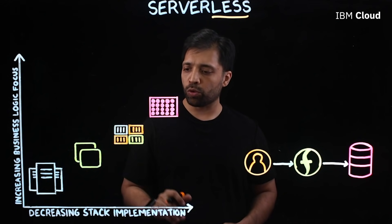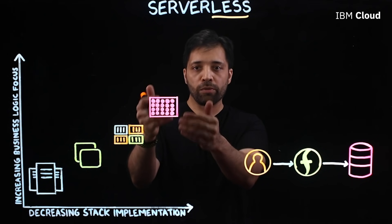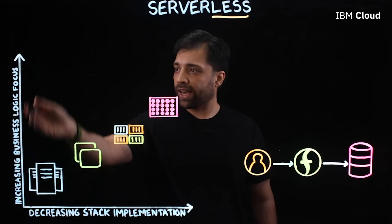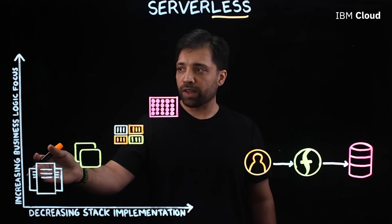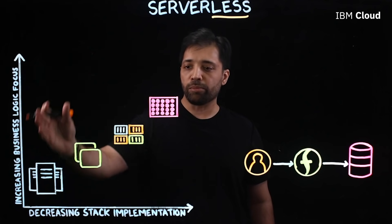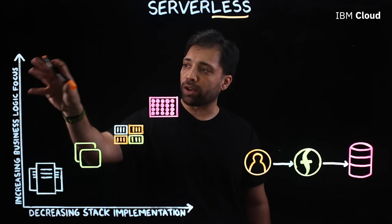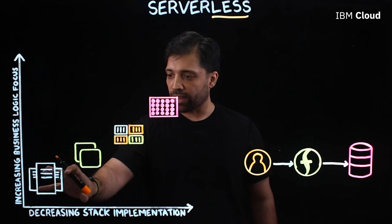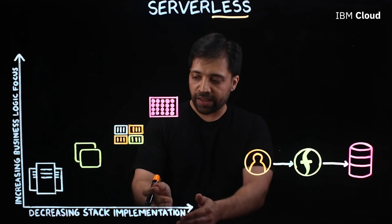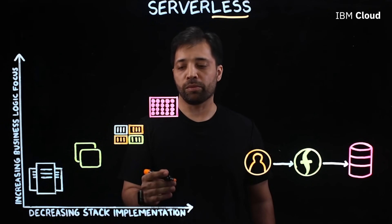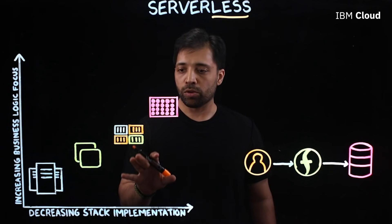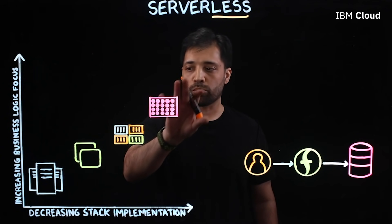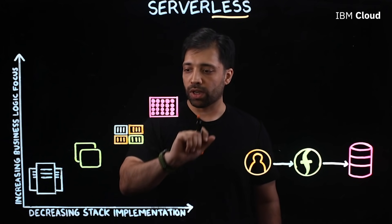Let me walk you through how we have gone to where we are on serverless and the journey behind that. On the y-axis, you see increasing business focus on logic — that means you're concerned more about writing code and less about the underlying infrastructure. And on the x-axis, you're seeing decreasing stack implementation, meaning you are in less control of what goes behind the scenes when you deploy or write your code.